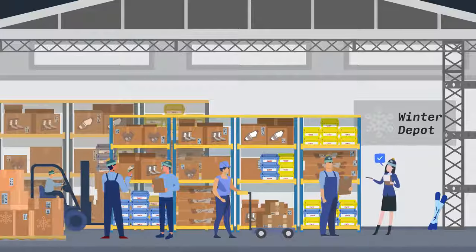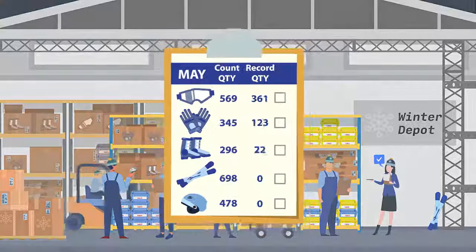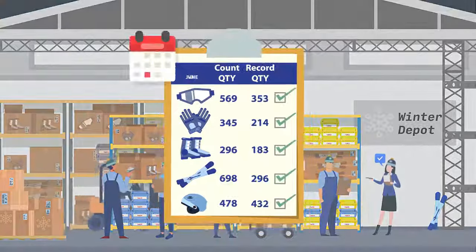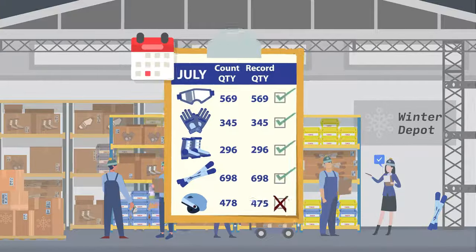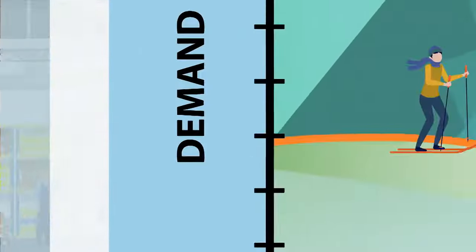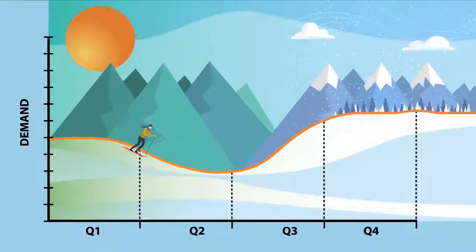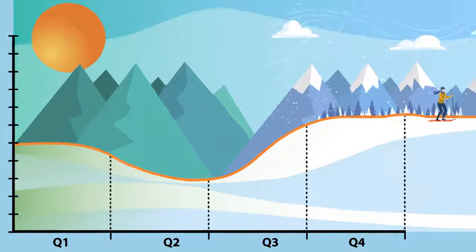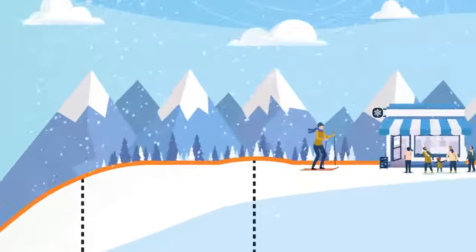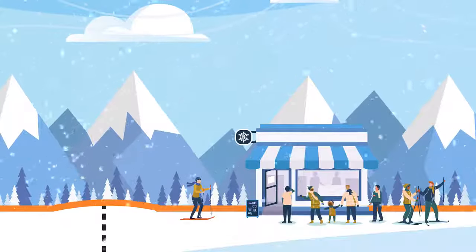Physical inventory counts are an essential part of keeping inventory records accurate and current. Up-to-date inventory records provide for better forecasts around sales and purchases and ensure your business always has the right amount of product on hand to meet your customer's demand.